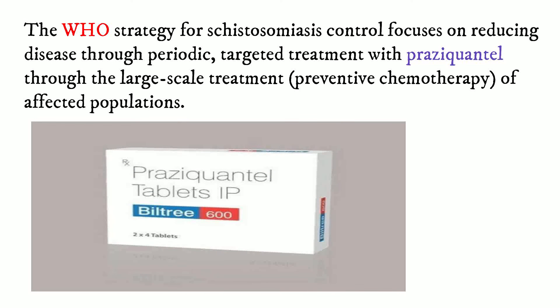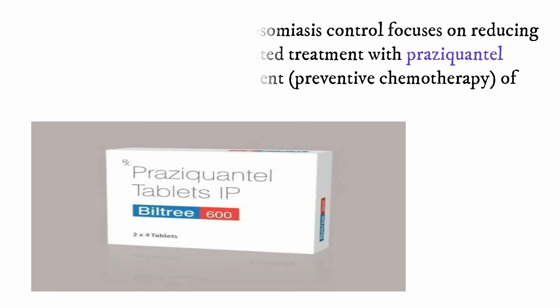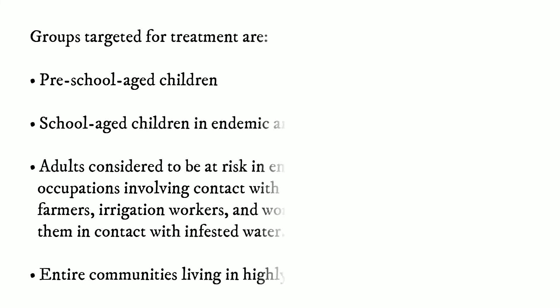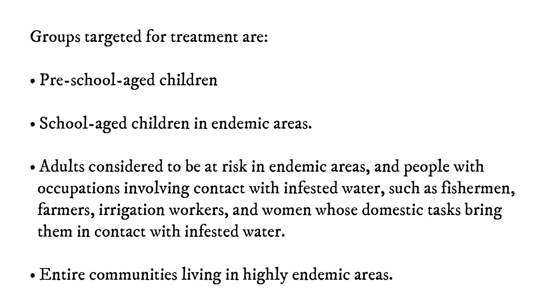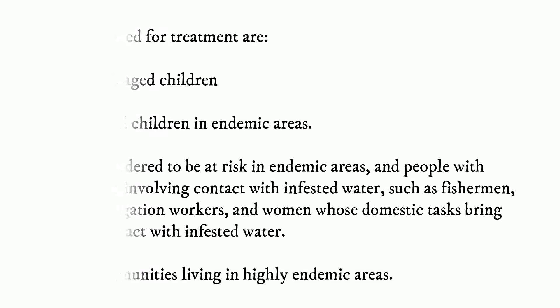The World Health Organization strategy for schistosomiasis control focuses on reducing disease through periodic, targeted treatment with praziquantel through large-scale treatment or preventive chemotherapy of affected populations. Groups targeted for treatment are: preschool-aged children; school-aged children in endemic areas; adults considered to be at risk in endemic areas and people with occupations involving contact with infested water, such as fishermen, farmers, irrigation workers, and women whose domestic tasks bring them in contact with infested water; and finally, entire communities living in highly endemic areas.